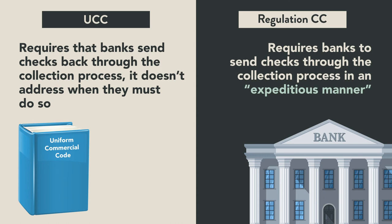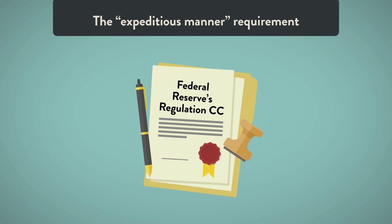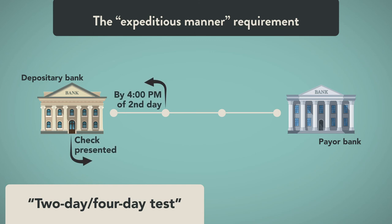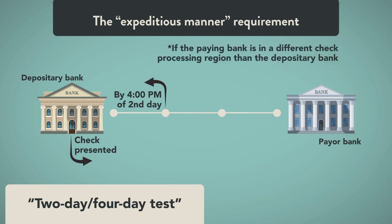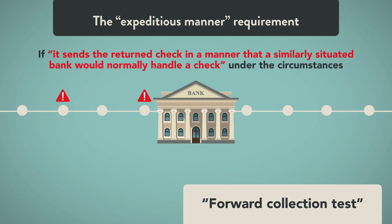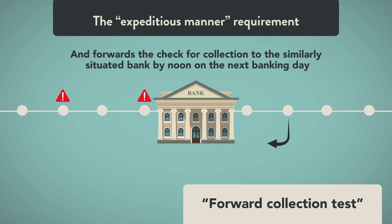There are two tests Regulation CC provides to measure the expeditious manner requirement — satisfying either test is acceptable. The two-day/four-day test is satisfied if the bank returns the check to the depository bank by 4 PM of the second business day following the banking day on which the check was presented to the paying bank. If the paying bank is in a different check processing region than the depository bank, it has until 4 PM of the fourth business day. The alternative forward collection test is satisfied even if the bank misses the two-day/four-day deadline, if it sends the return check in a manner that a similarly situated bank would normally handle a check under the circumstances.